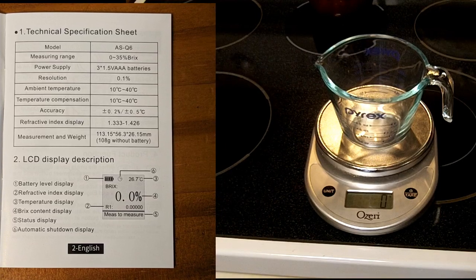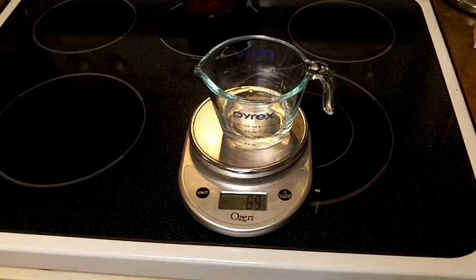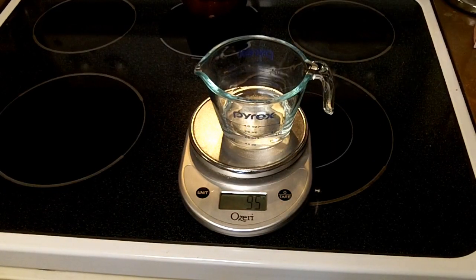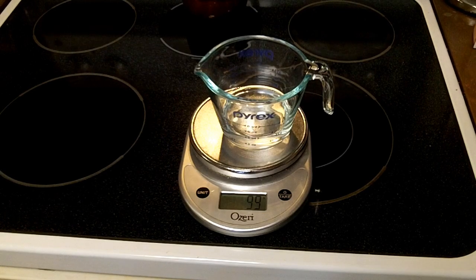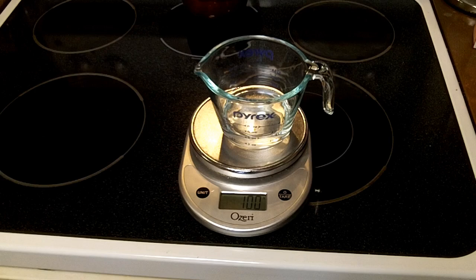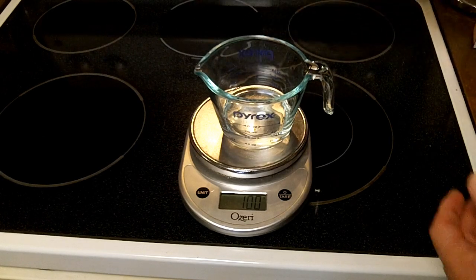The range here is between zero and 35 brix. So we're going to get 100 grams of water, and then we're going to add 10 grams of sugar.